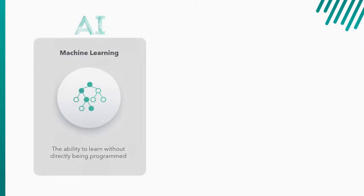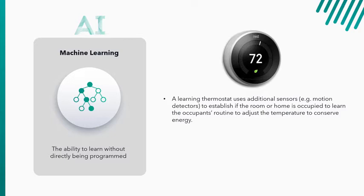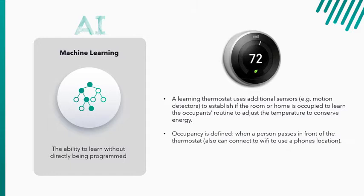If we use the same thermostat analogy to describe machine learning, which is a form of artificial intelligence, this would be the Nest thermostat. So many of you have these or know about them, but these are learning thermostats. They use sensory input, primarily motion detectors, to establish if a room is occupied. It has a period of learning so that it can learn occupants' routines based on the sensor input and adjust the temperature based on this routine to conserve energy. So if you're gone for certain hours of the day, it can stop cooling the house down during those times to save energy. And it can predict when you're coming home to start cooling the room down.